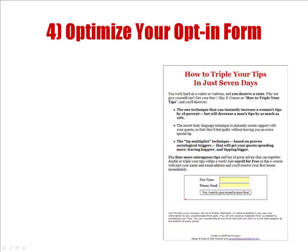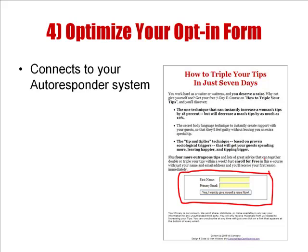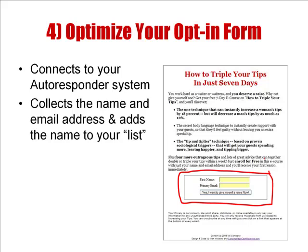Last part: optimize your opt-in form. This connects your page and your traffic to your autoresponder system. It collects the name and email address and adds them to your list, and your list is what we're trying to build. Here are two important points. Number one: ask as little as possible — the least amount you need in order for the lead to be effective. In this case, we're just asking for a first name and a primary email address that somebody really reads.